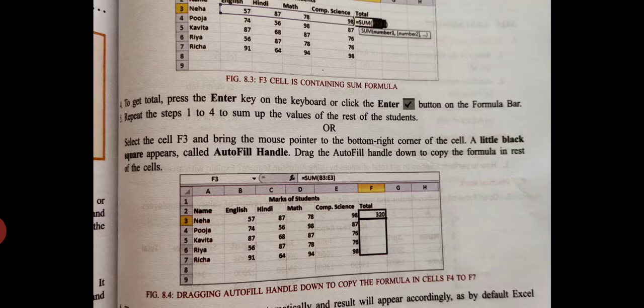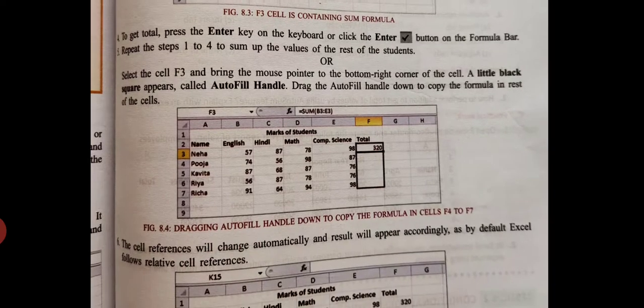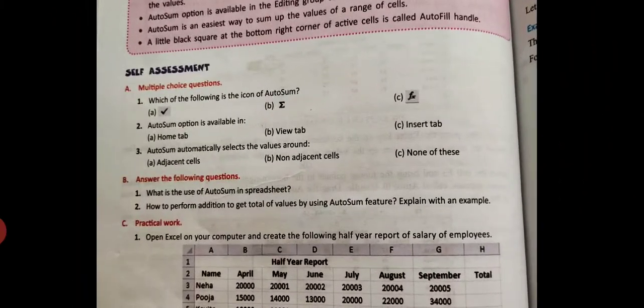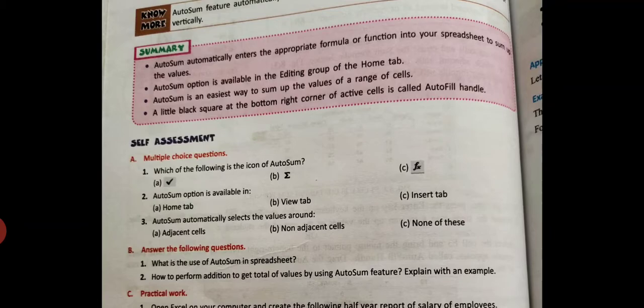You need not have to click to find the sum of the data. Just by clicking AutoSum it will give you the sum of all the data. The AutoSum option is available in the editing group, students. These things you have to go through, I already mentioned.